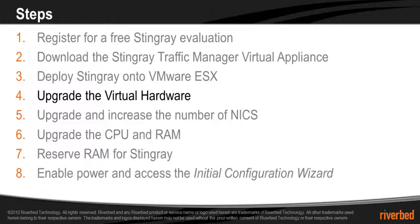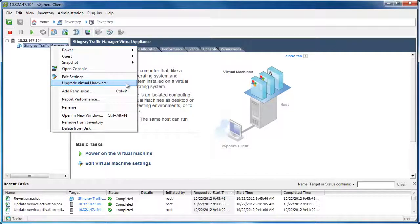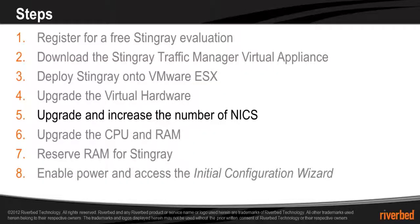After it finishes deploying, the next thing we want to do is upgrade the virtual hardware. This will allow us to use the vmxnet3 network adapter, which has advanced features such as receive-side scaling and improved overall performance. Simply right-click on the virtual appliance and click Upgrade Virtual Hardware. The Stingray virtual appliance comes pre-configured with a single NIC of type vmxnet; let's change that to vmxnet3 and add two additional network adapters.